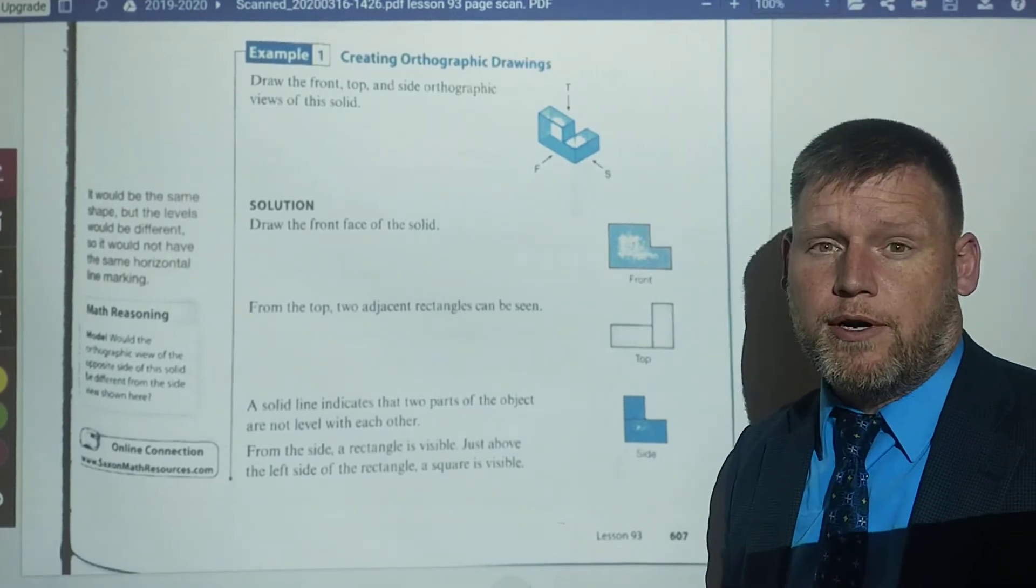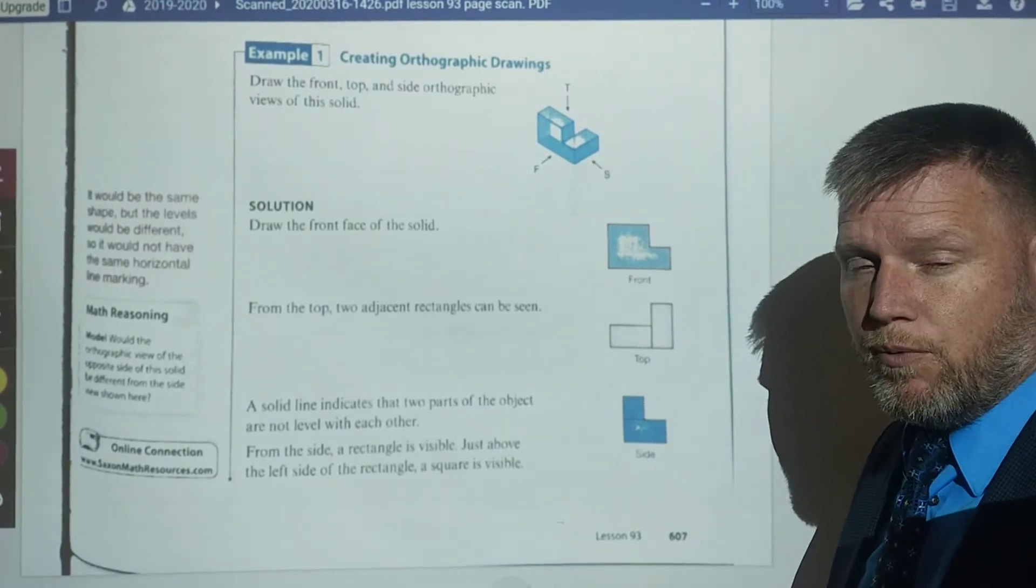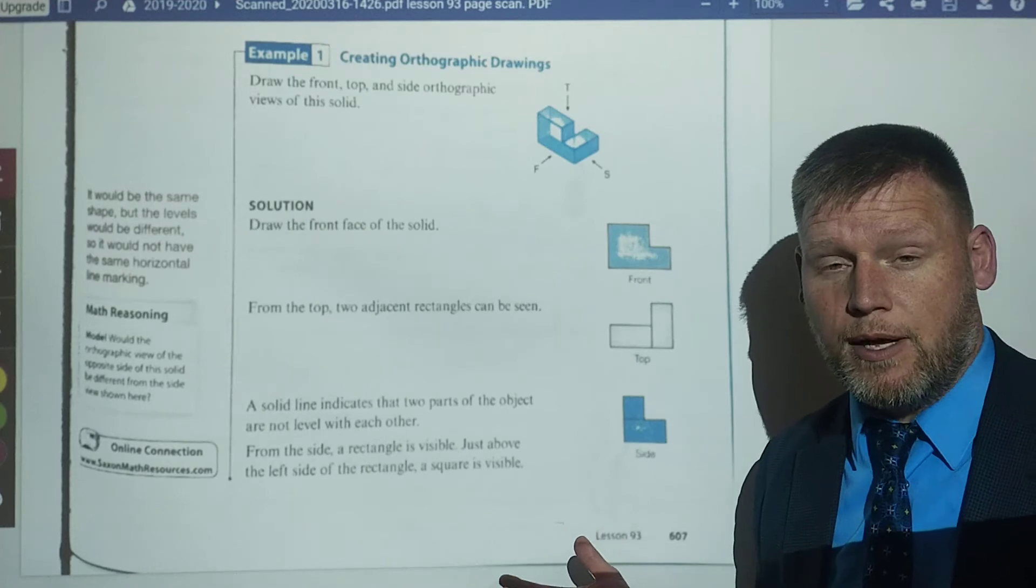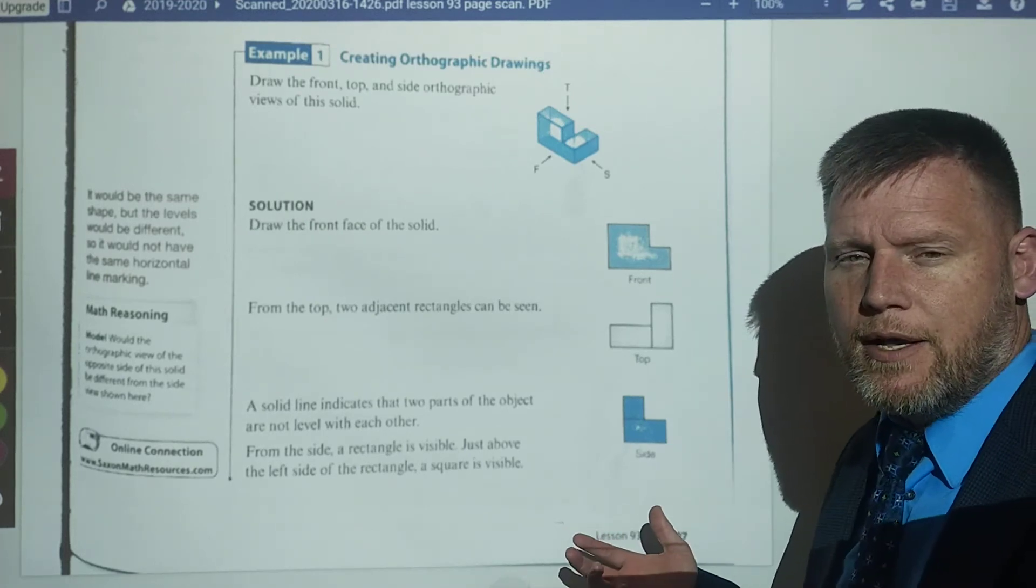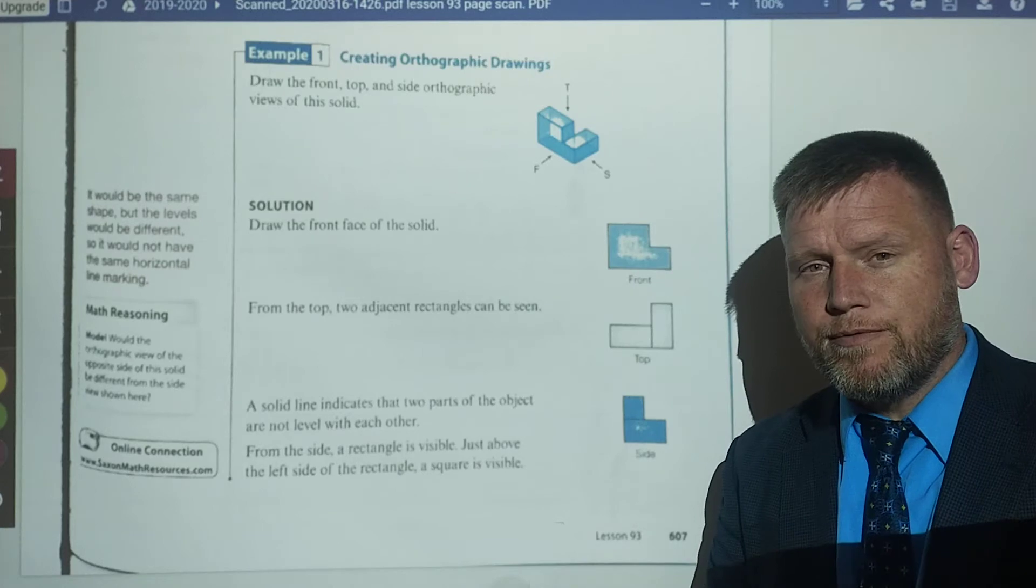This is orthographic drawing. It's really simple to understand what we're doing. We're looking at just a three-dimensional object and representing it only one side at a time from a two-dimensional view.